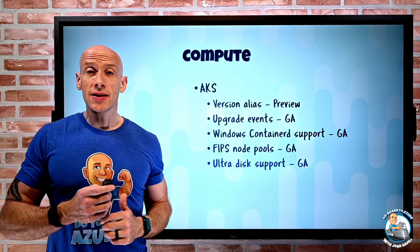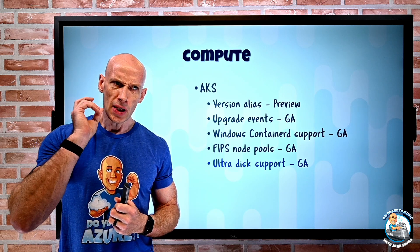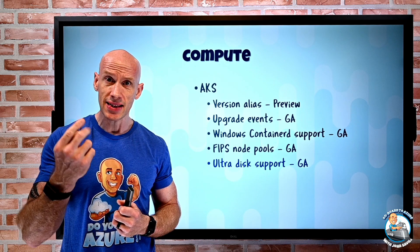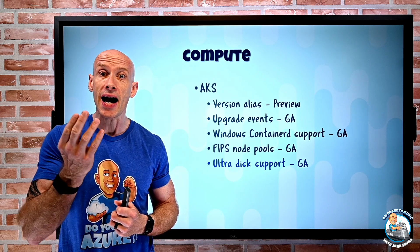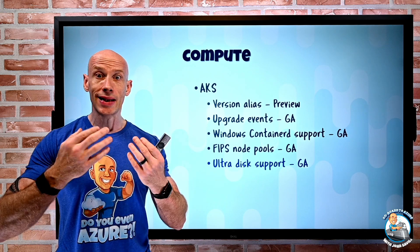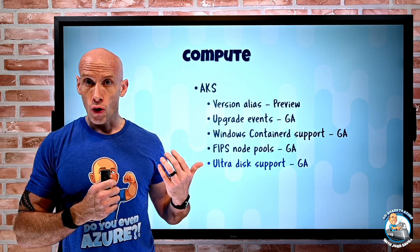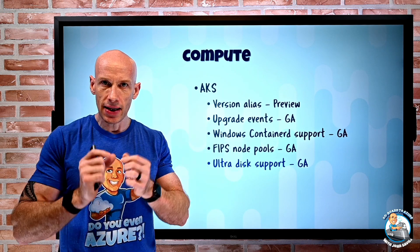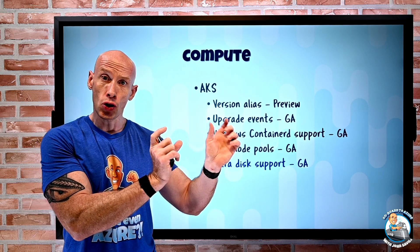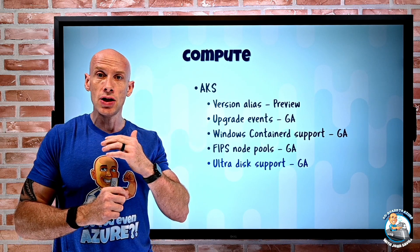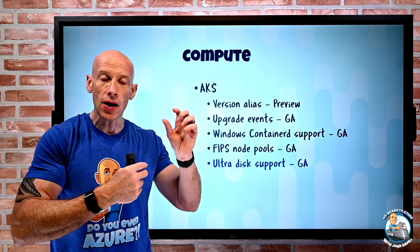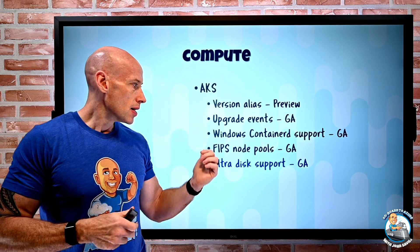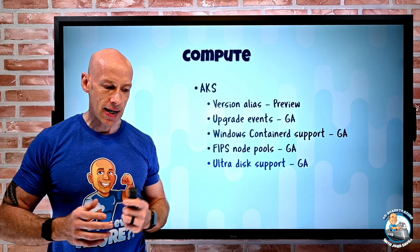Ultra disks are now supported on AKS. If you think of managed disks, there are four types: standard HDD, standard SSD, premium SSD, and ultra disk. Ultra disk gives me the lowest latency, the highest performance, and I can individually tweak the capacity, the IOPS, and the throughput. Those IOPS and throughput I can even change dynamically while the disk is being used, as my needs change over time. So now I can use those in AKS as well.